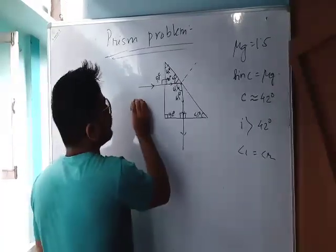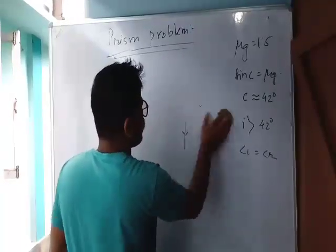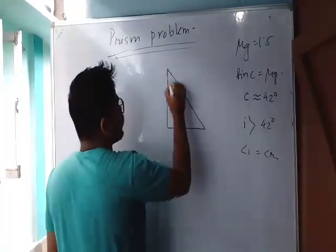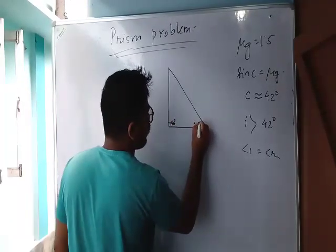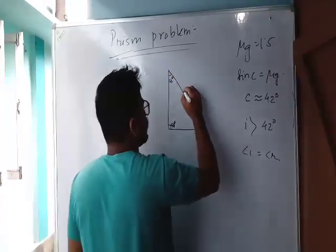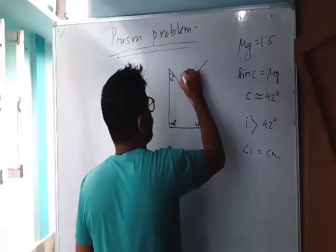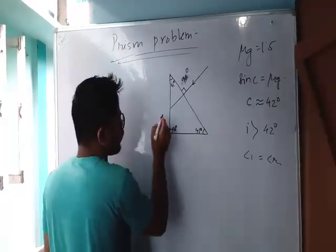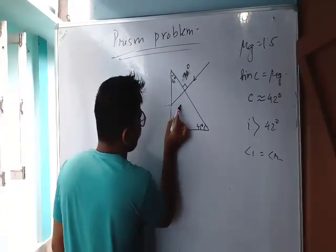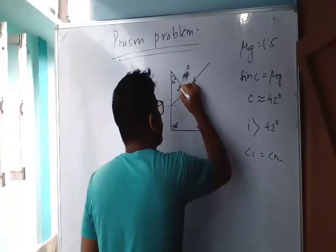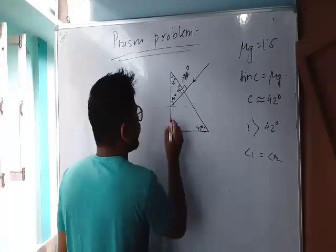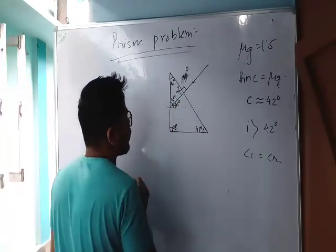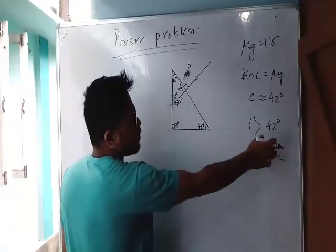I will show you the first example. Suppose this is a prism — it is a 90-degree angle, it is 45 degrees, this is 45 degrees. It is normal incidence, so it is 45 degrees. This is 90 degrees. The angle of incidence is greater than the critical angle, so total internal reflection occurs.